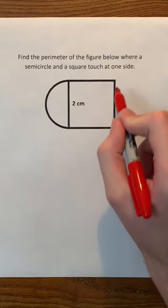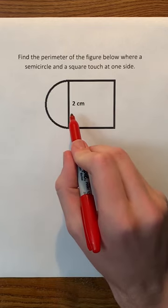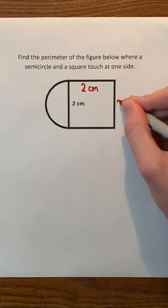Remember that all of the sides of a square have the same length. So because this side is 2 centimeters, all of these other sides must also be 2 centimeters.